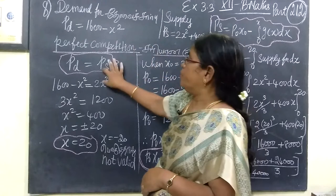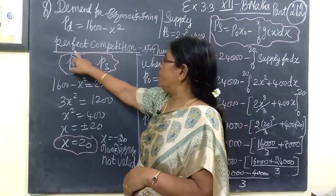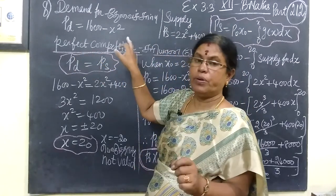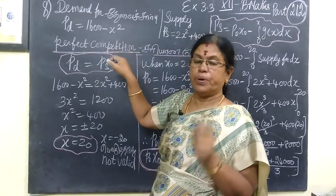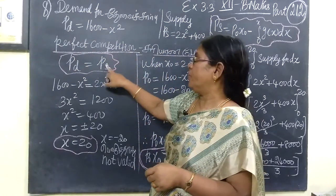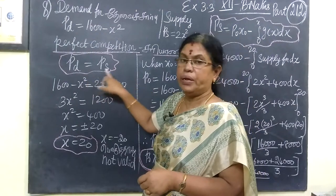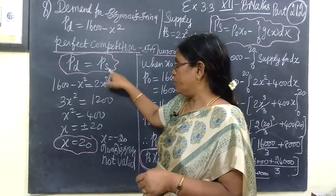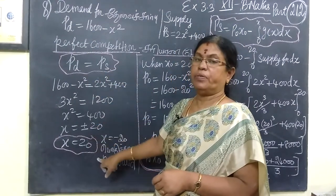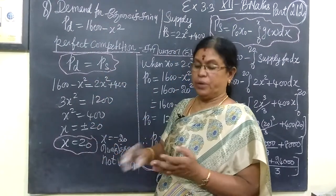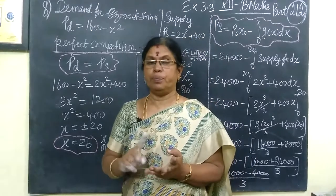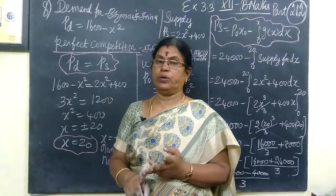So these two are equal, because in perfect competition at the equilibrium point, demand equals supply. Each one is equal. Whenever the sum is equal, the S value equals the P value.